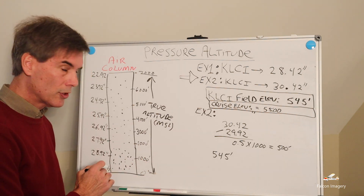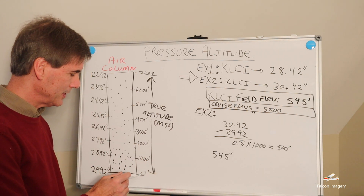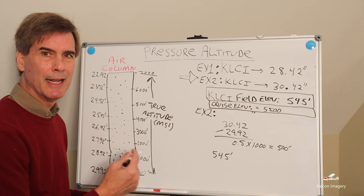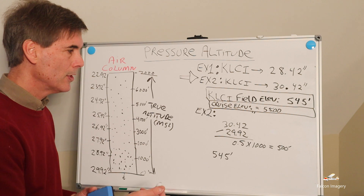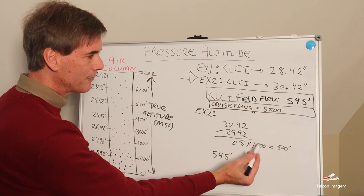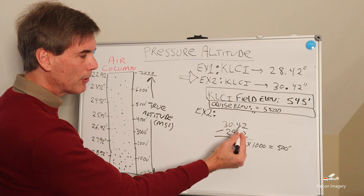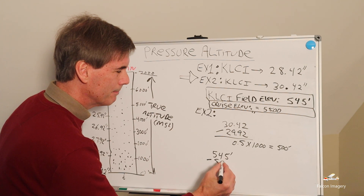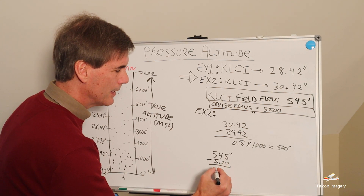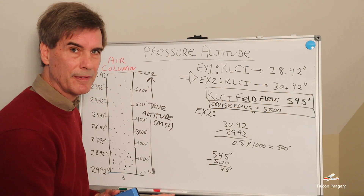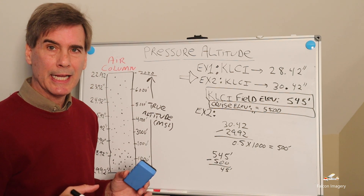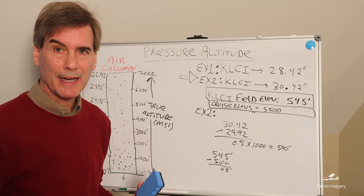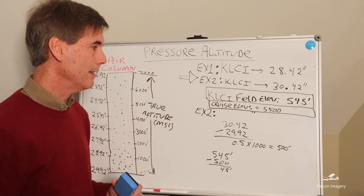The air molecules are going to be even denser. If we come over to our column again, at sea level it's 29.92 inches of mercury, but at 30.42 inches we're effectively down underneath the surface of the earth. Since the reported pressure is higher than standard pressure, we're going to subtract 500 feet, which leaves us with 45 feet. So we look in the takeoff performance charts not at the 545-foot elevation, but at actually 45 feet elevation.